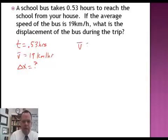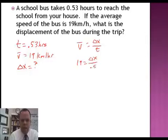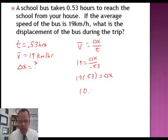So average velocity equals displacement over time. So we take the equation, velocity equals displacement over time, plug in our variables, 19 equals delta x over 0.53. Multiply both sides by 0.53, we get a displacement, in this case of kilometers, 10.07 kilometers.